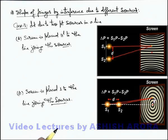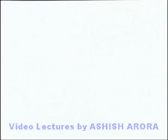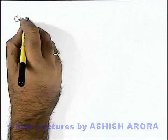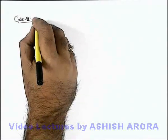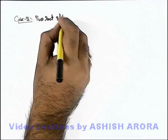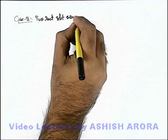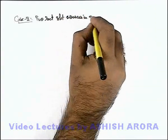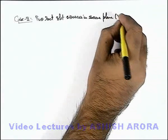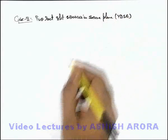Let's continue with Case 2 of fringe shapes. The second case is when we use 2 rectangular slits, or slit sources, in the same plane — which is the case of Young's double slit experiment we've already discussed.